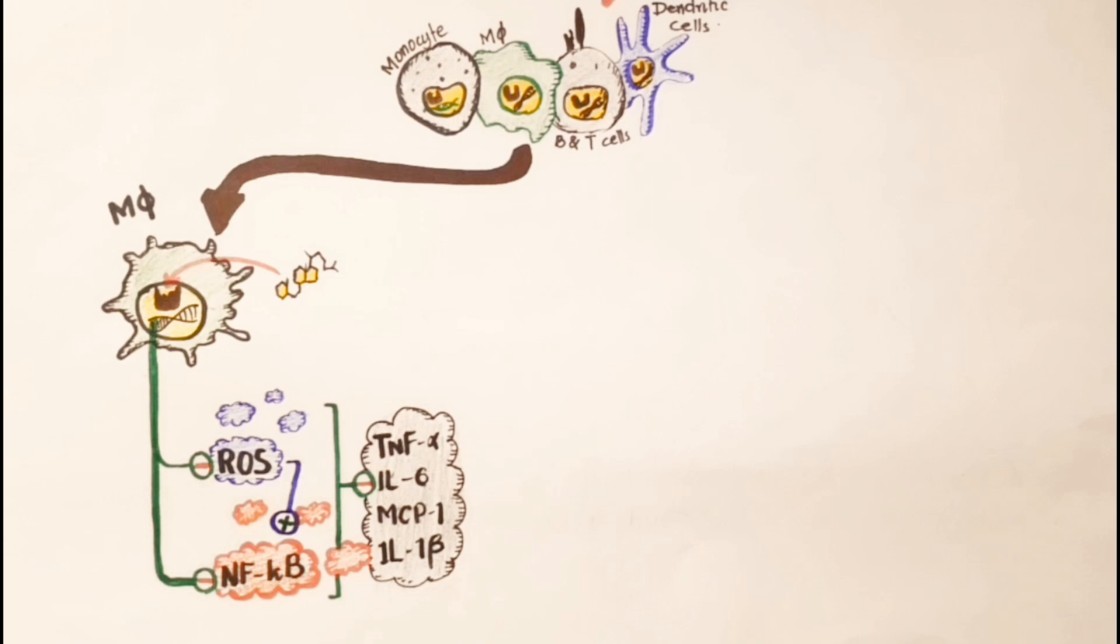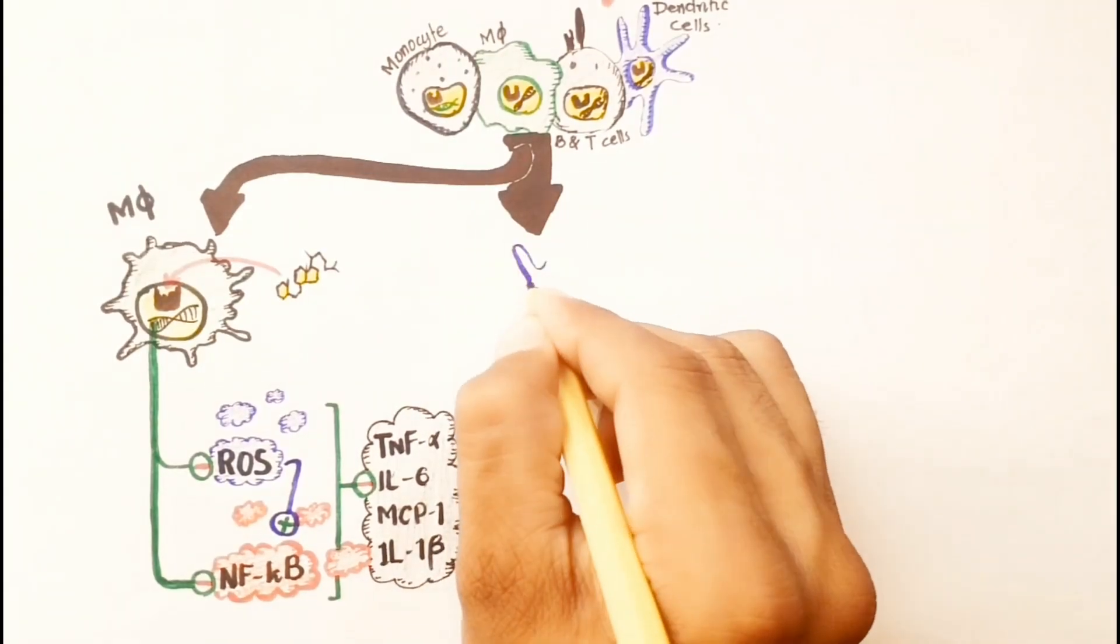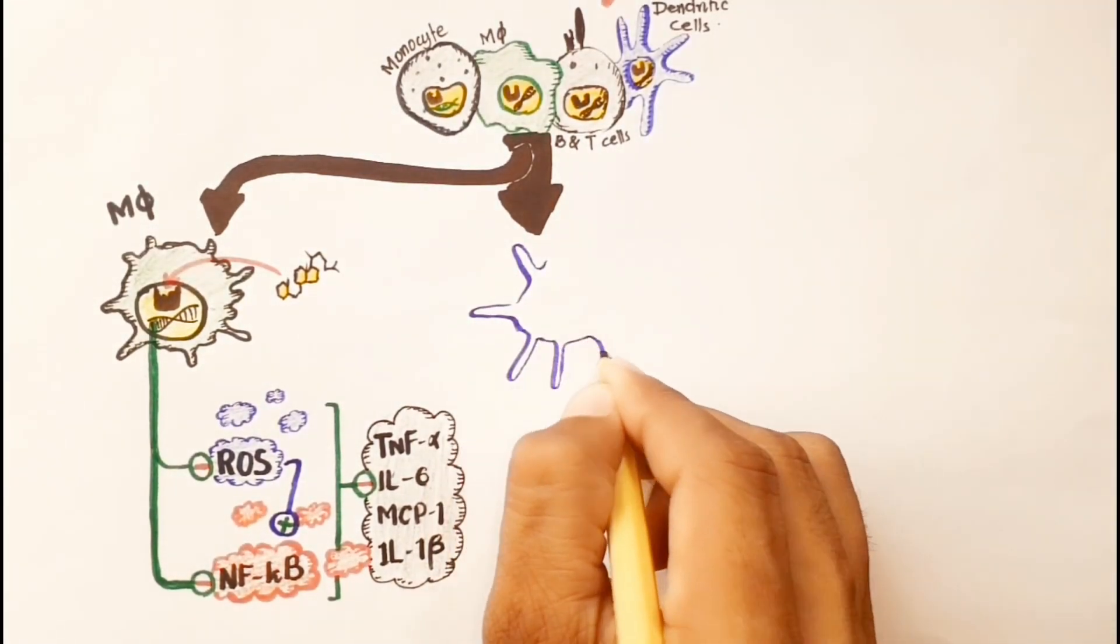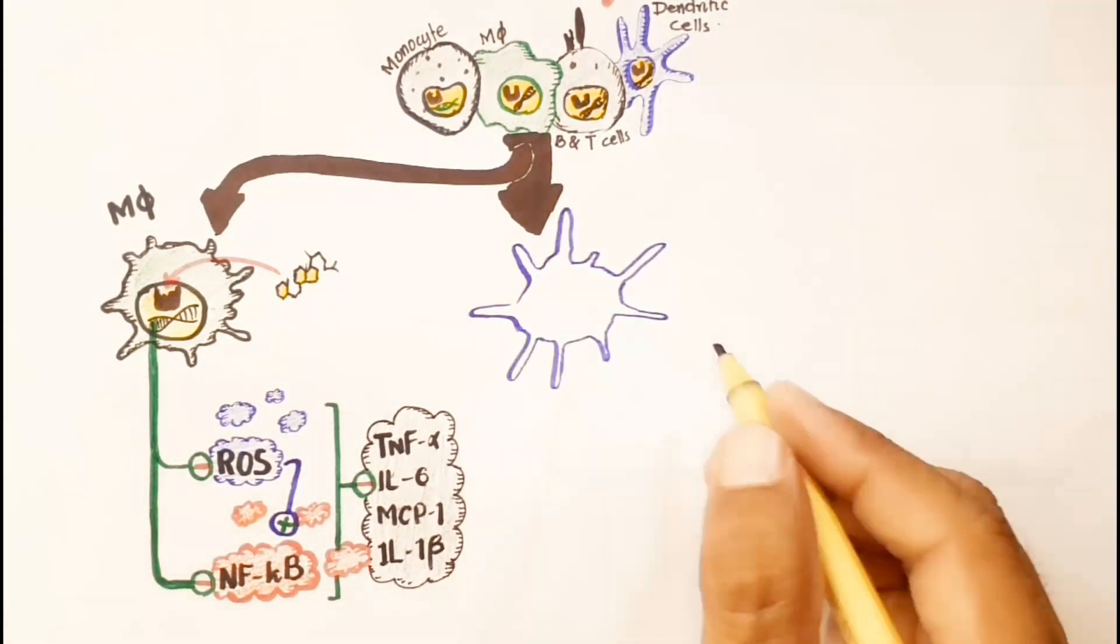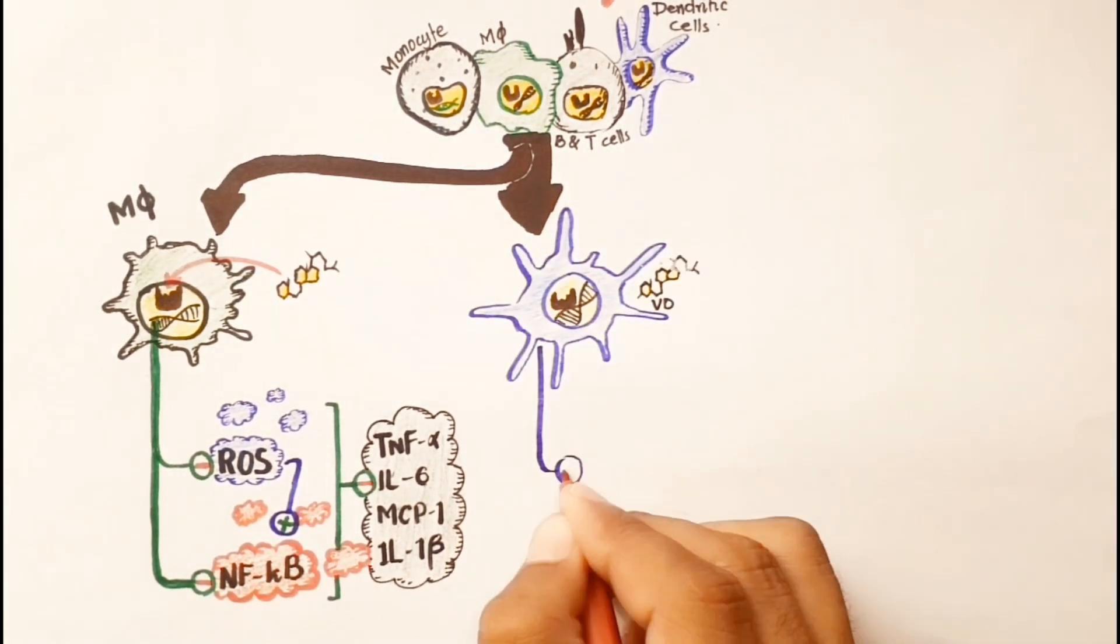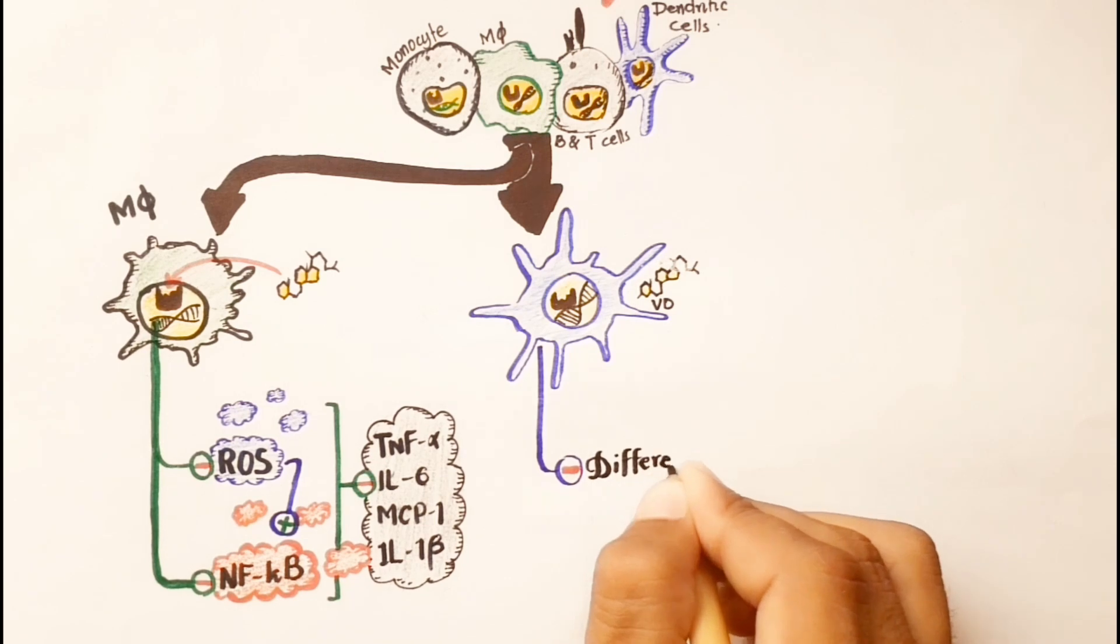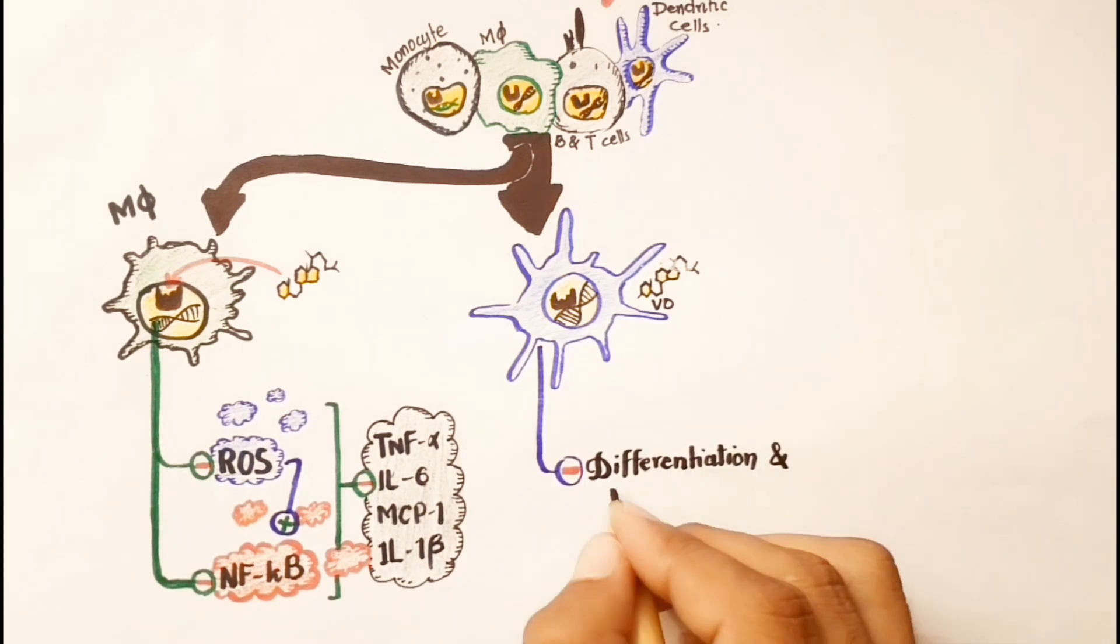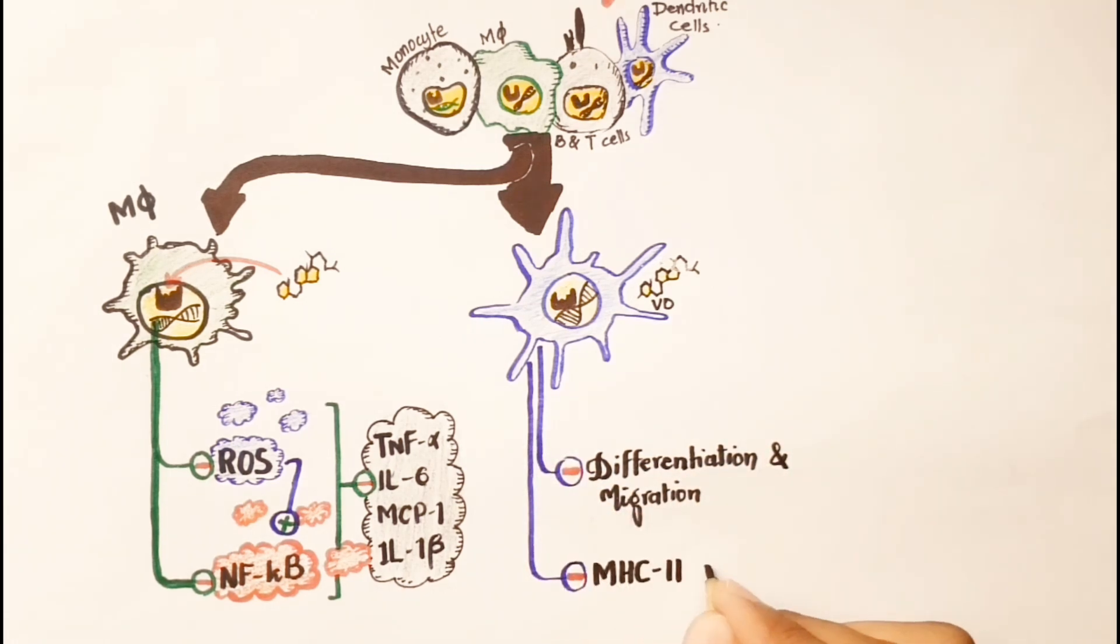In addition to immune regulatory effects of vitamin D on macrophages, it acts on dendritic cells and suppresses the differentiation and migration of these cells. It also decreases the expression of MHC type 2 on dendritic cells.